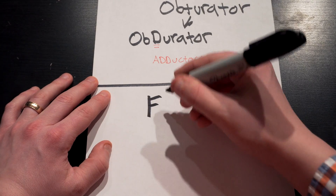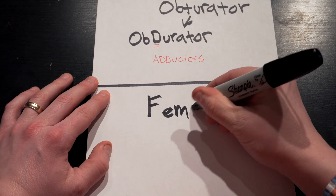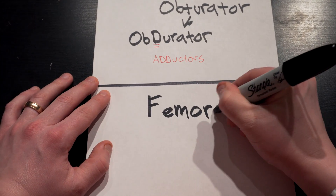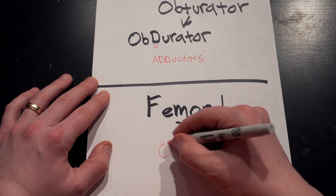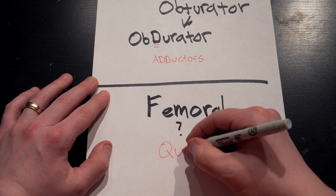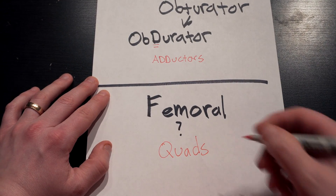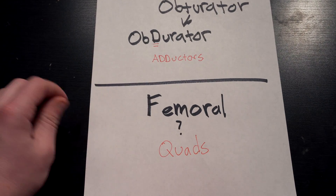Pretty easy. So let's move on to the very last nerve, which is the femoral nerve. Really the only thing left are the quads. There are other muscles in the leg, but for our purposes we'll just remember that the only major group left is the quads. And that's pretty much it — you've got it down.